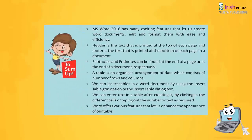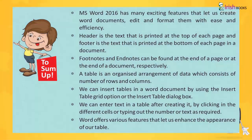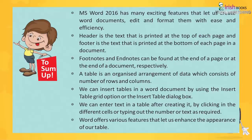To sum up: MS Word 2016 has many exciting features that let us create Word documents, edit and format them with ease and efficiency. Header is the text that is printed at the top of each page, and Footer is the text that is printed at the bottom of each page in a document. Footnotes and endnotes can be found at the end of a page or at the end of a document respectively. A table is an organized arrangement of data which consists of a number of rows and columns. We can insert tables in a Word document by using the Insert Table Grid option or the Insert Table dialog box. We can enter text in a table after creating it by clicking in the different cells and typing out the number or text as required.